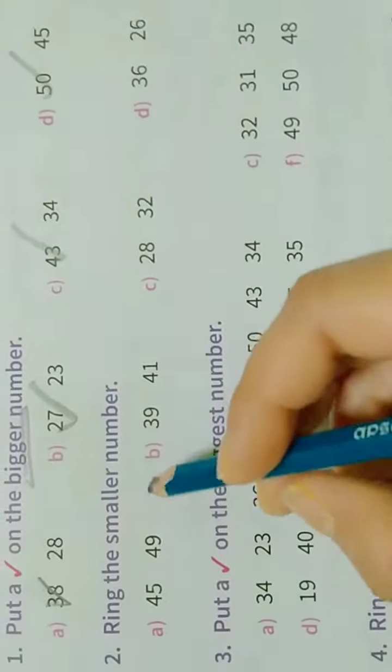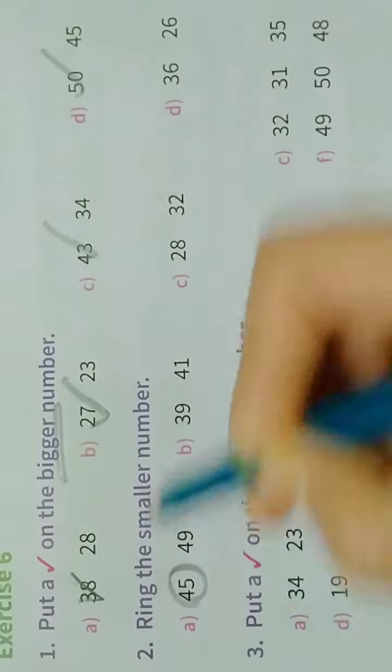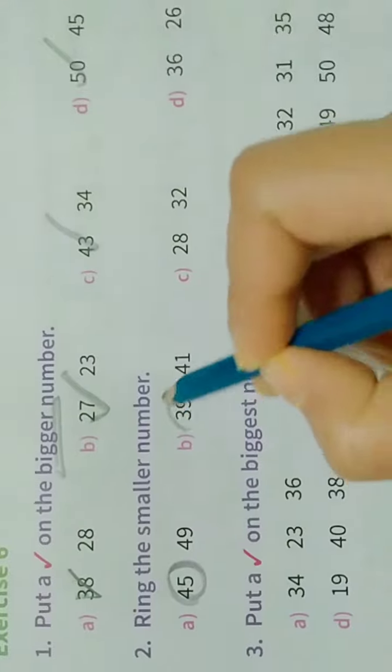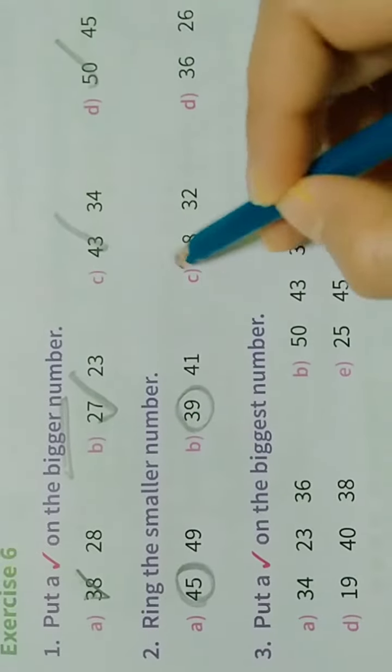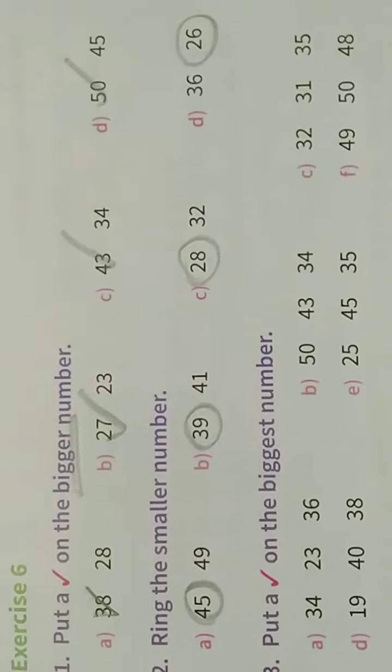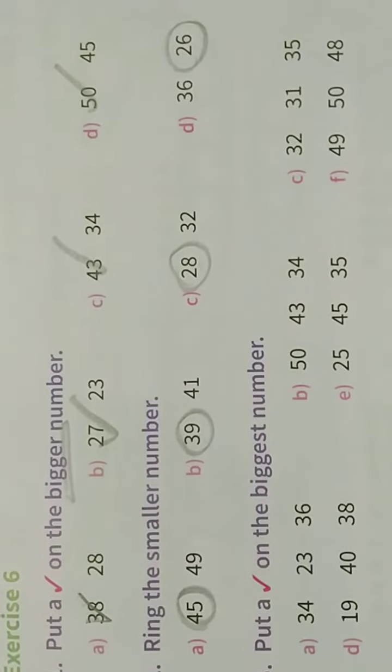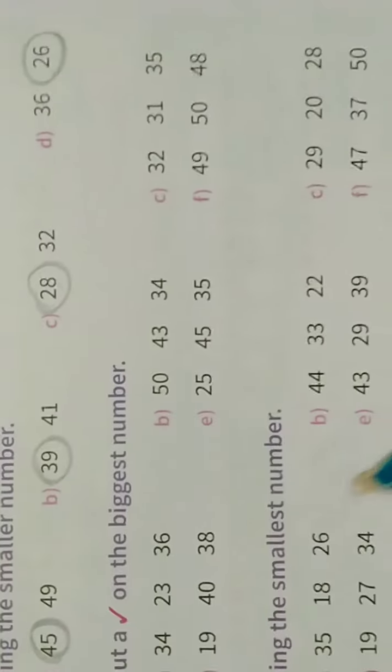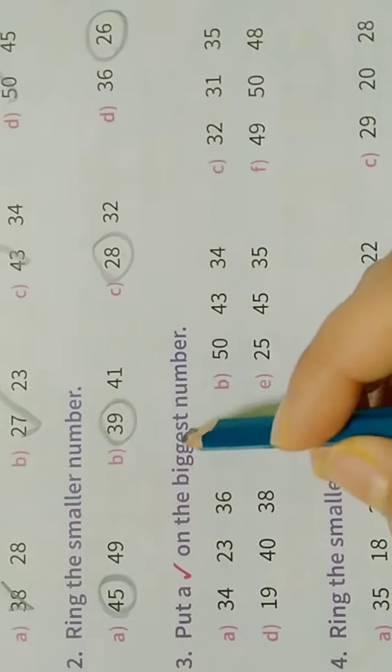Next, circle the smaller number. Which is smaller, 45 or 39? 39 is smaller. 28 or 26? 26 is smaller.